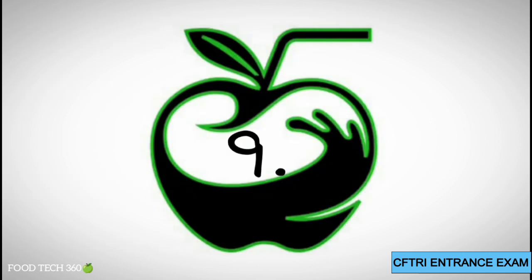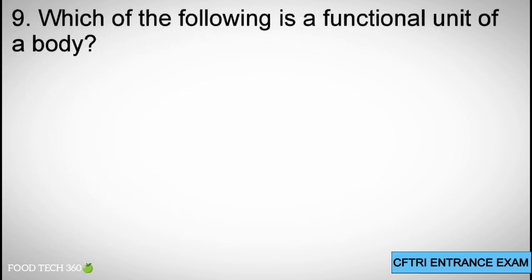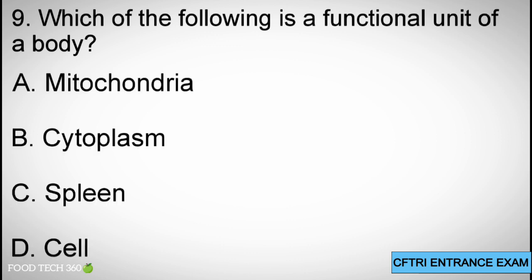Question 9: Which of the following is the functional unit of a body? A. Mitochondria, B. Cytoplasm, C. Spleen, D. Cell. Correct answer: D. Cell.